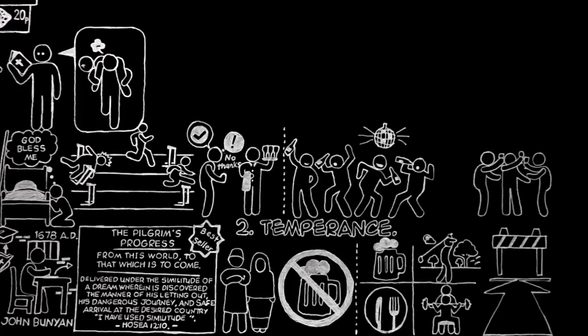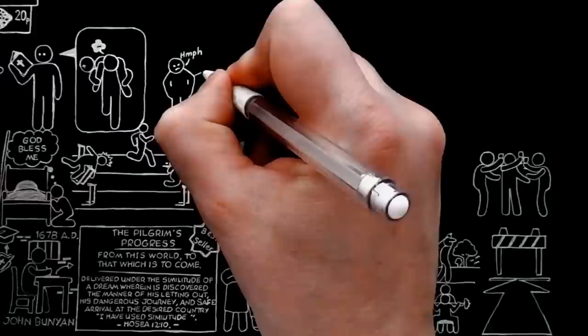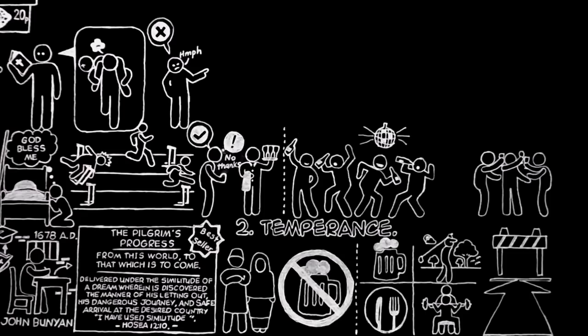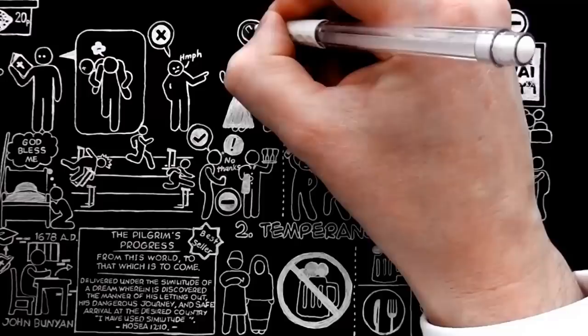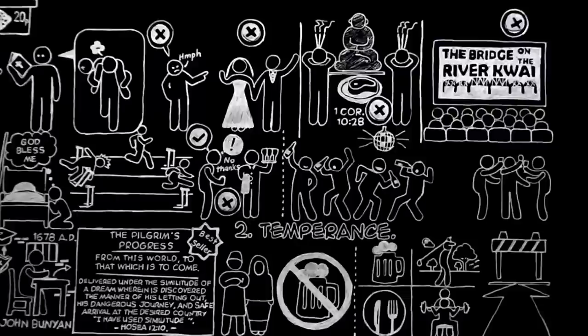One of the marks of a certain type of bad man is that he cannot give up a thing himself without wanting everyone else to give it up. That is not the Christian way. An individual Christian may see fit to give up all sorts of things for special reasons: marriage, or meat, or beer, or the cinema. But the moment he starts saying the things are bad in themselves, or looking down his nose at other people who do use them, he has taken the wrong turning.